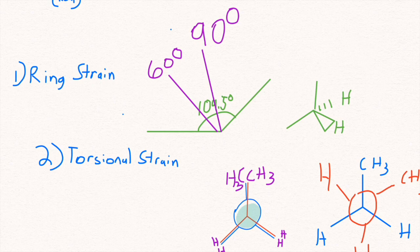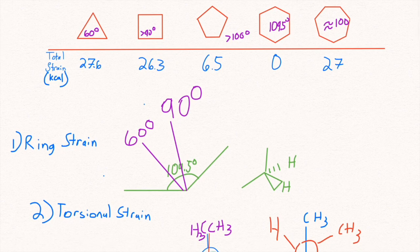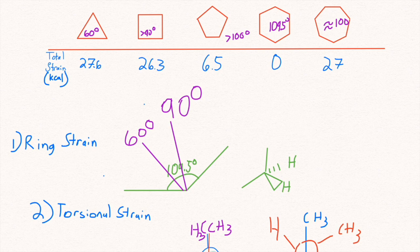Let's first talk about cyclopropane, which has angles of 60 degrees each. It has one of the most total strain because it suffers from both ring strain and torsional strain.